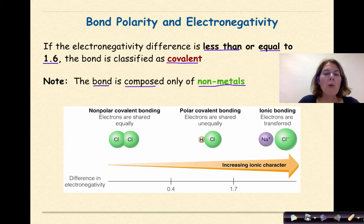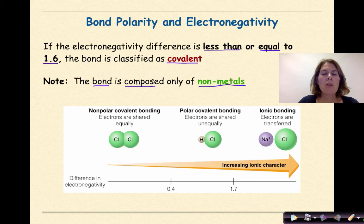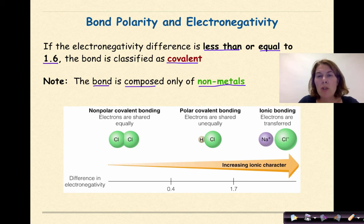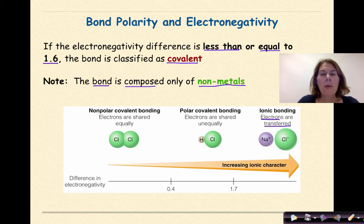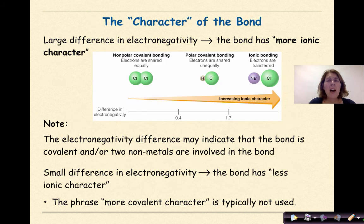We can see from this image: nonpolar covalent bonding, polar covalent bonding where electrons are shared unequally, and ionic bonding where electrons are transferred from a metal to a nonmetal. This represents increasing ionic character.